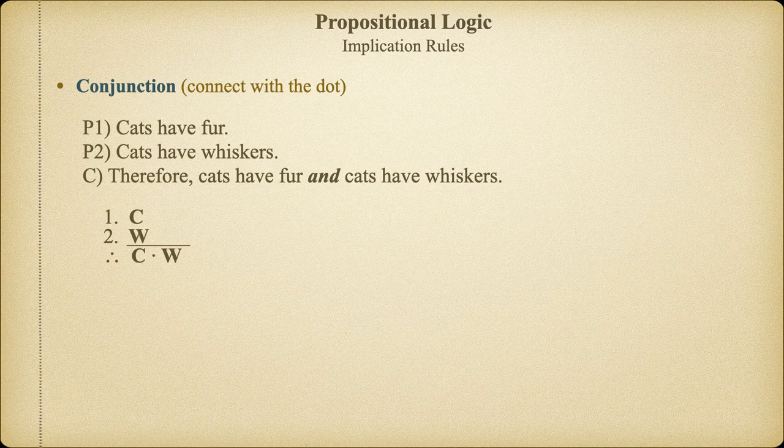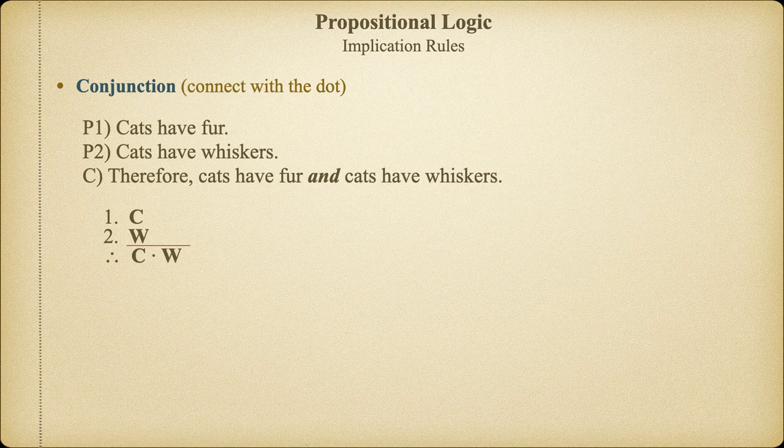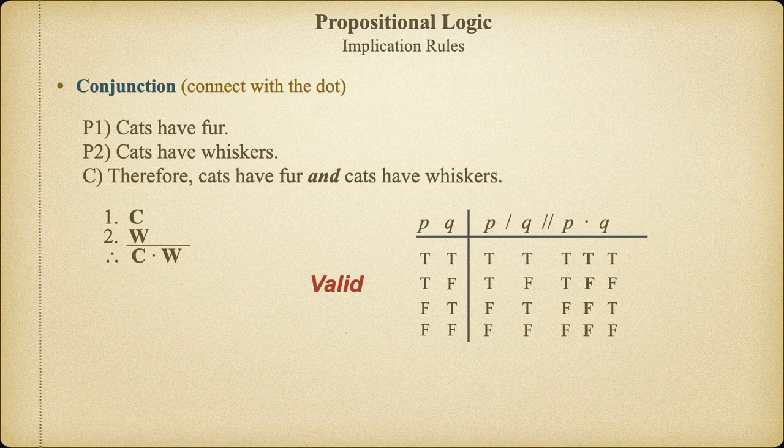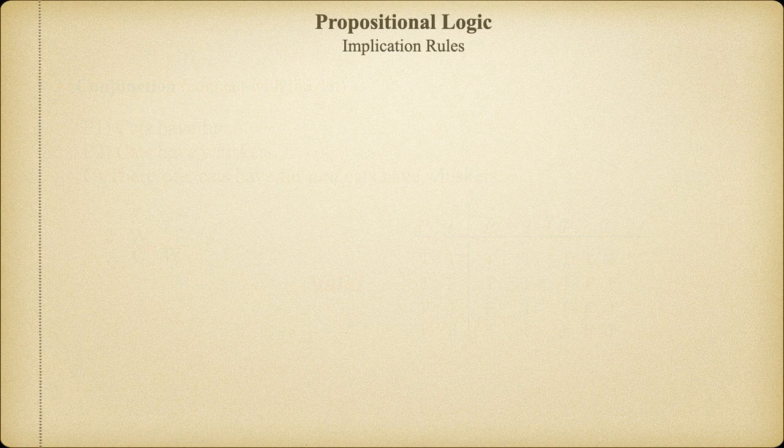Because I've already asserted C on line one and W on line two, I can validly conclude that they will be true together or conjoined. Though this seems intuitively clear, we of course can use our truth table to prove that our intuition is correct. A quick inspection of each line of the truth table demonstrates that there are no lines where both premises are true and the conclusion false, so we can now add this rule of conjunction to our toolbox of valid argument forms.